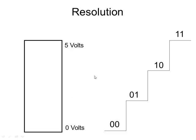One fourth of five volts is 1.25 volts. So every time I increase my binary number by one, that represents a jump of 1.25 volts, which, as you can see, is not a very precise measurement.